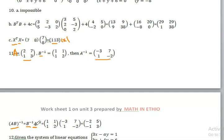Now we produce A inverse. We have 2 by 2. B inverse is 1 root 2. A inverse is 1, 1 to be 1 minus 2.